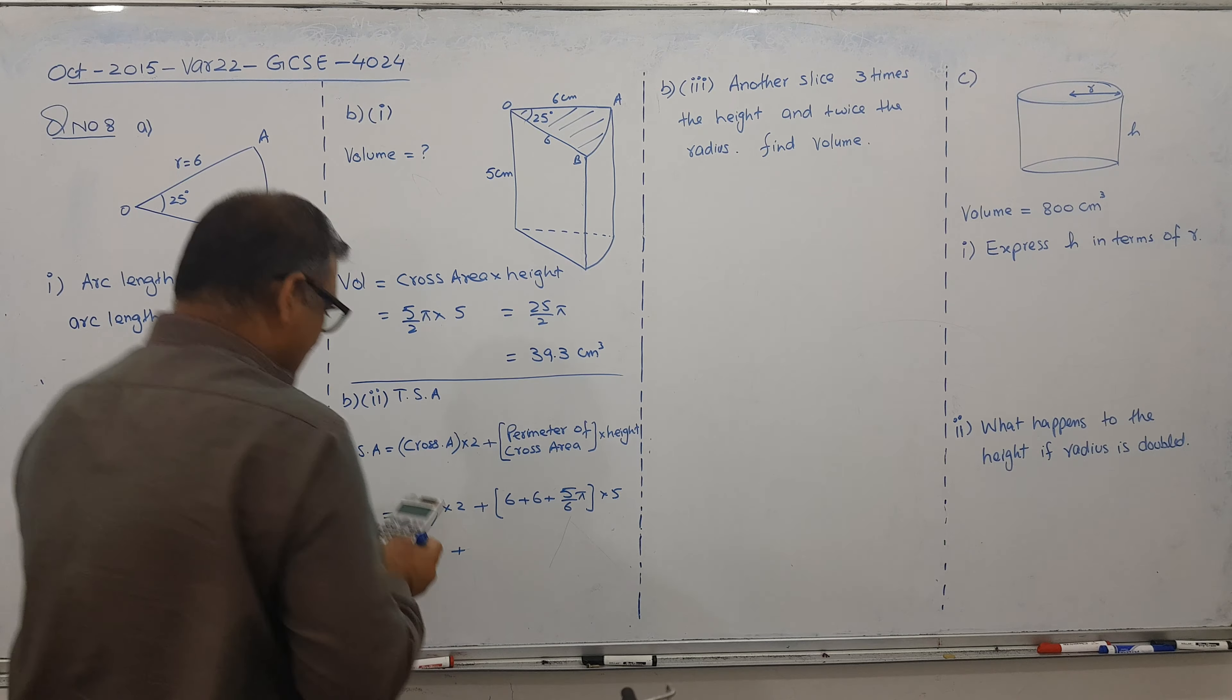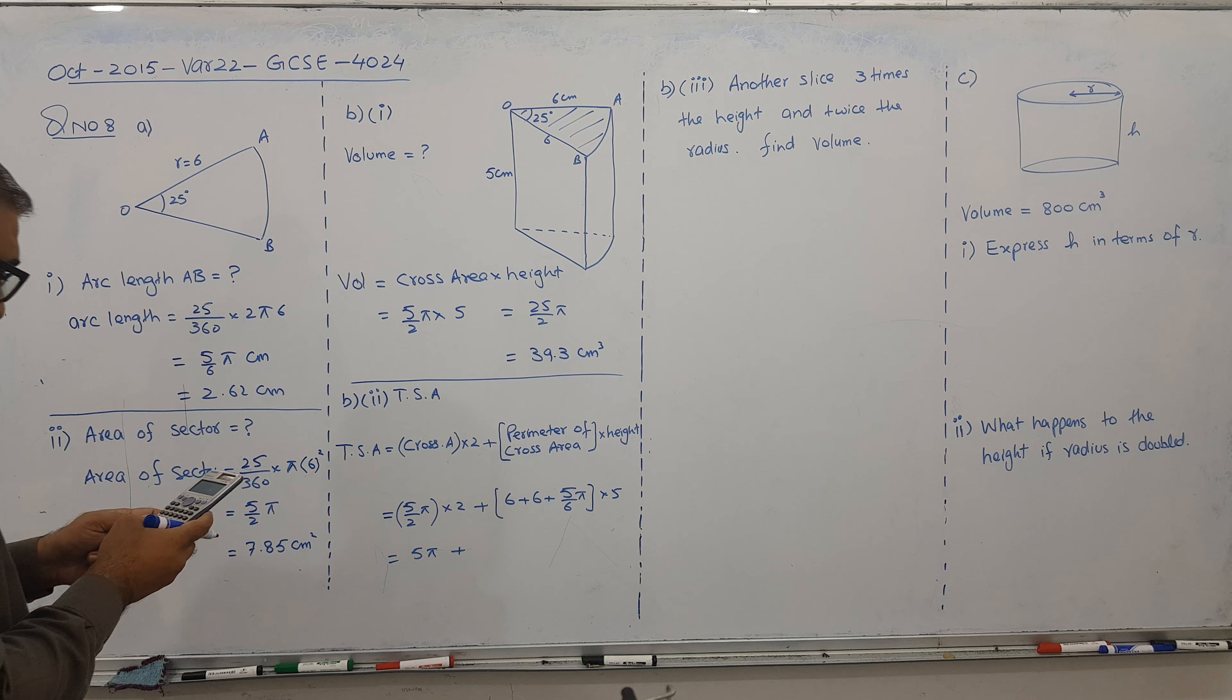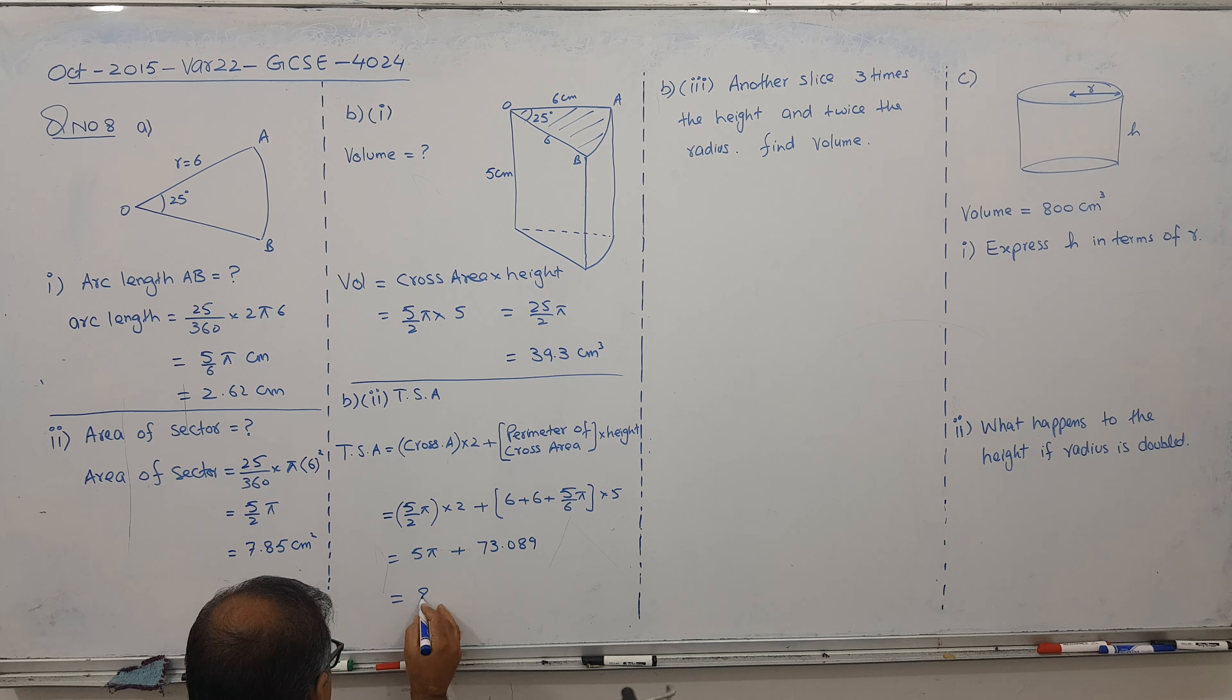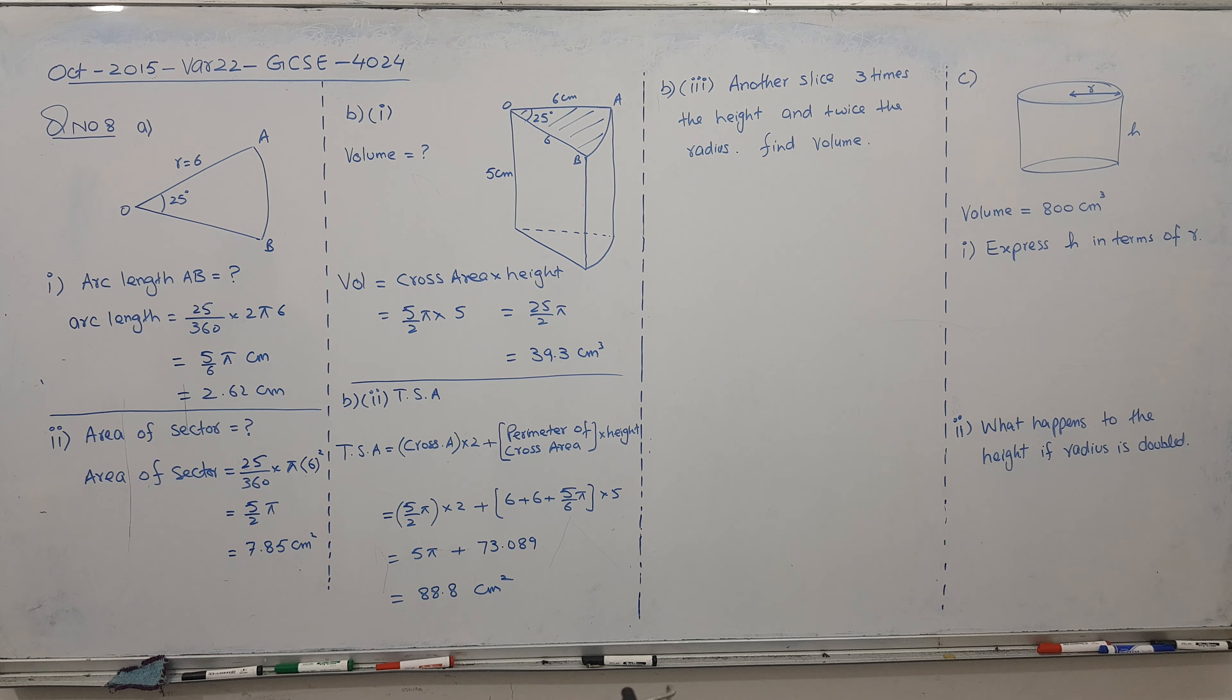So this is coming 12 plus 5 divided by 6 times pi. And into 5. So it is coming 73.089 plus 5 pi. It is giving us 88.79. It becomes centimeter square. 88.8.